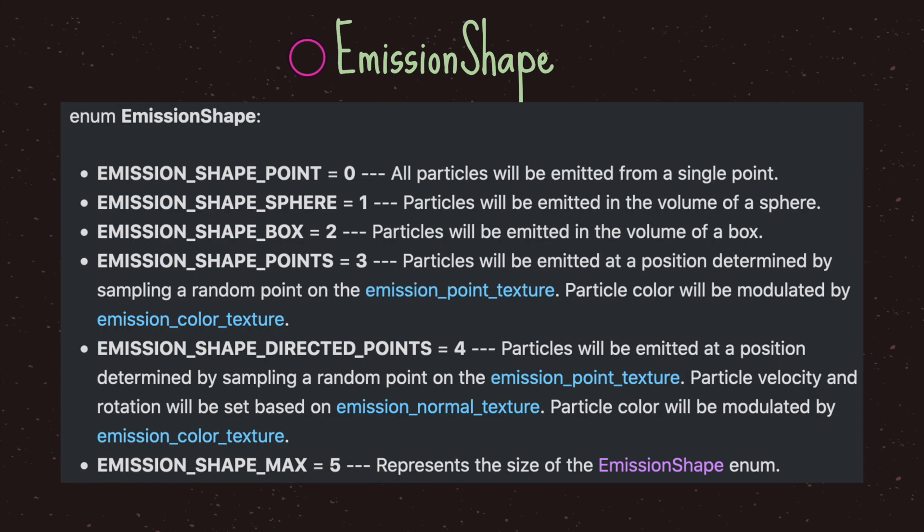The emission shape property has several different options. The default option is the point, or single point — all particles will be emitted from a single point. You also have sphere and box, and you can choose different points and so forth. It's best to keep this value at its default value of zero.